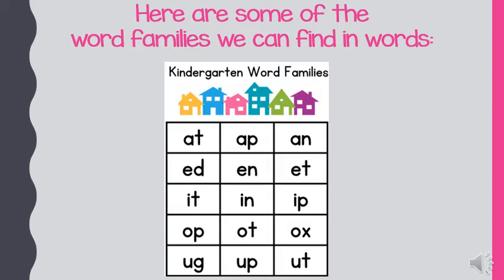And the last row across has the short U sound to start — 'uh,' like umbrella — for 'ug,' 'up,' and 'ut.'